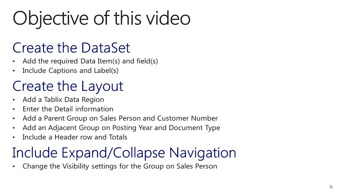We will start by adding a TableX data region to the body of the report and next we will enter the detail information and the fields that we would like to aggregate. Then we will add a parent group on salesperson and customer number, and after that we will enhance the TableX by including adjacent groups on the posting year using an expression and document type. We will also include a header row and display the calculated totals and subtotals.